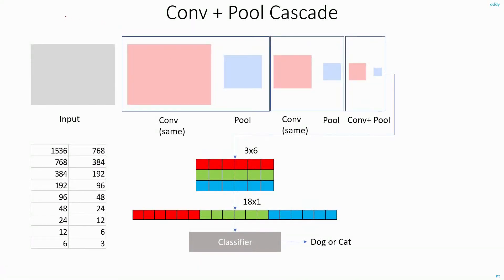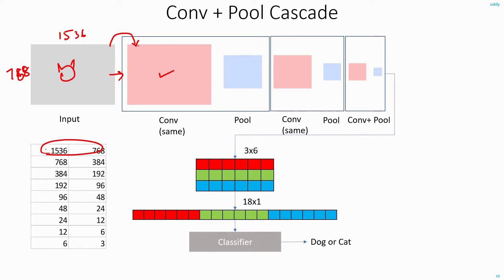In CNNs, it is not just one round of convolution and pooling that is applied — usually you do multiple rounds. You take an input image and feed it to the convolutional neural network. In the first round, you apply convolution and get back a feature map of the same size as your input, say 1536 width and 768 height. Then you apply pooling to reduce the size to half. In the next round, you take the pooled feature map, apply convolution and then pooling to reduce it to half again, continuing for multiple layers until you get a feature map of size 3 by 6.